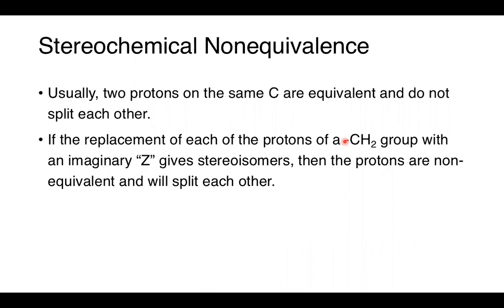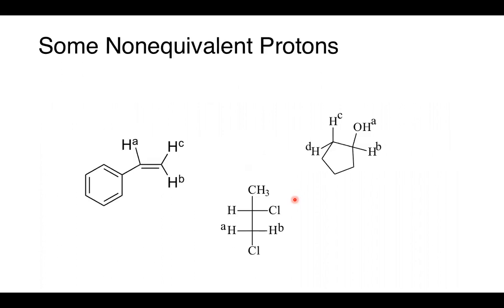Stereochemical non-equivalence: the styrene NMR was an example of this. Two protons on the same carbon are usually equivalent, as in methyl or methylene groups. But sometimes they are not — if the replacement of each proton of a CH₂ group with an imaginary Z group gives stereoisomers, then the protons are non-equivalent and will split each other. Examples include the vinyl protons of styrene, a propane molecule with two chlorines creating non-equivalent adjacent protons, and cyclopentane ring protons.